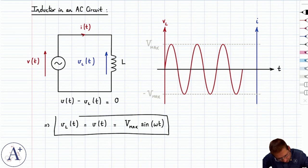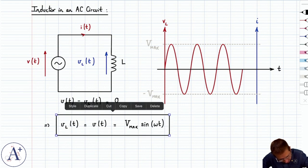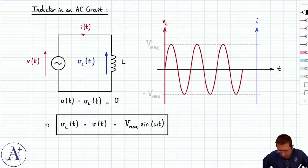So VL as a function of time is equal to Vmax sin(ωt), and if you graph it like we did here, you get the following graph. Now let's compare that to the current going through the circuit.